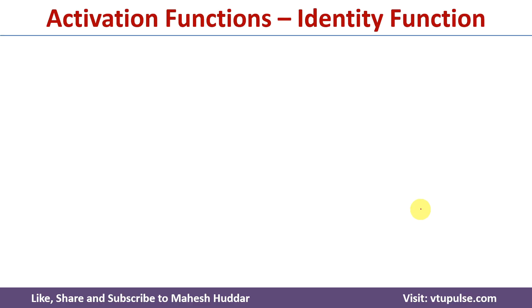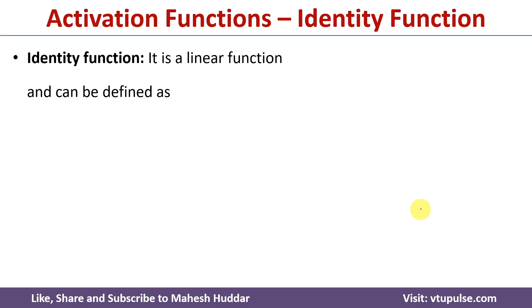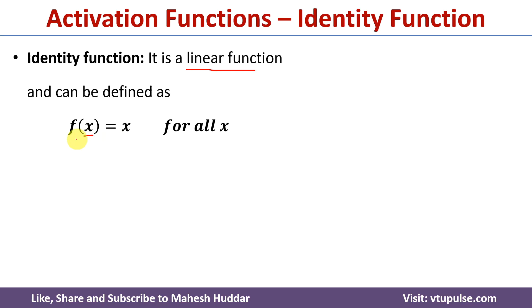We will discuss each of the activation functions one by one. The first activation function is the identity activation function. Identity activation function is also known as linear activation function because whatever the input we have, the same thing will be the output. For example, if the net input is equivalent to x, whenever we apply the linear or identity activation function on the net input, we will get again the same value. That is the reason it is called the identity or linear activation function.